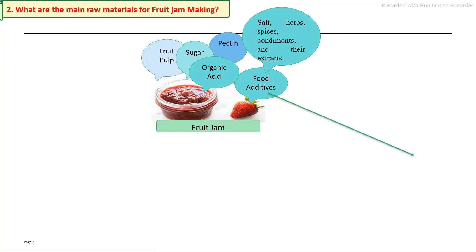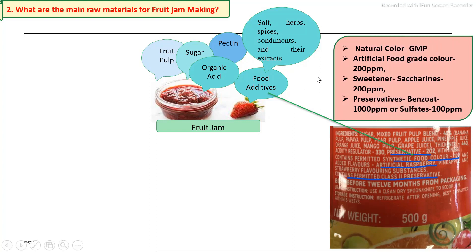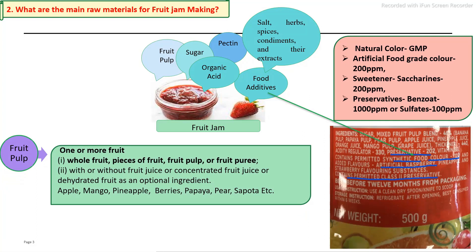Then, food additives for jam. You can see on this label that preservatives, synthetic food colors, and artificial flavoring substances may be added. The main requirement is natural color. Food grade color may be added up to 200 ppm. Sweeteners may be added up to 200 ppm. Preservatives — benzoate not more than 1000 ppm or sulfite not more than 100 ppm — these are the main additives added into the jam manufacturing process.